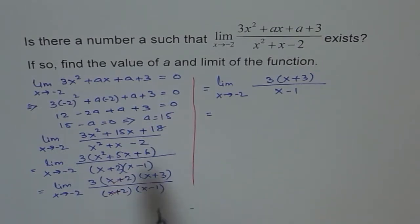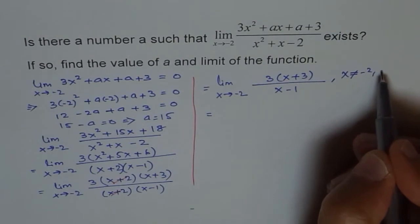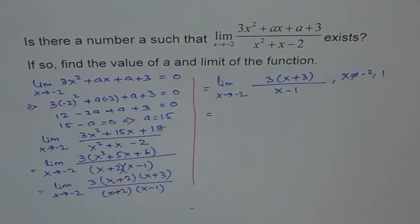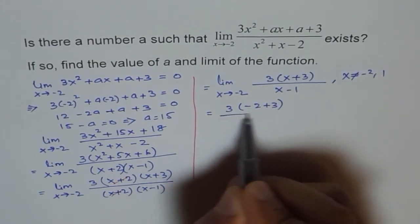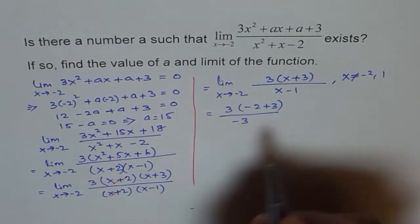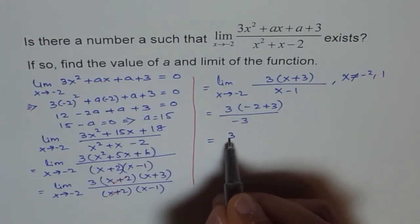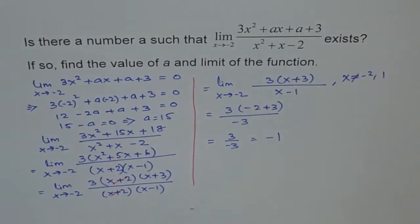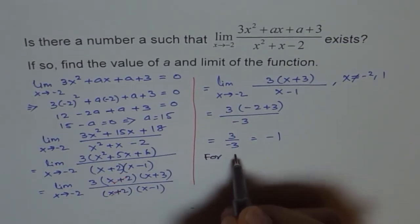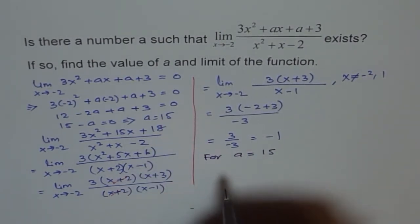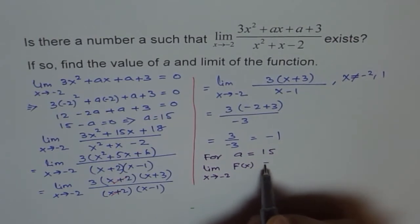So the simplified function has restrictions that x is not equal to minus 2 and not equal to 1, since those are the two roots of the denominator. Now we can plug in minus 2: we get 3 times (minus 2 + 3) over (minus 2 - 1), which is 3 times 1 over minus 3, giving minus 1. Therefore, for a equals 15, the limit of f(x) as x approaches minus 2 is equal to minus 1.